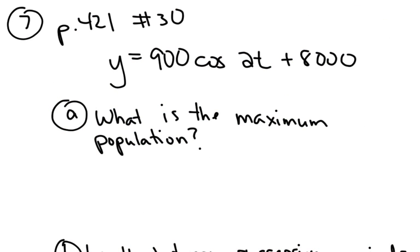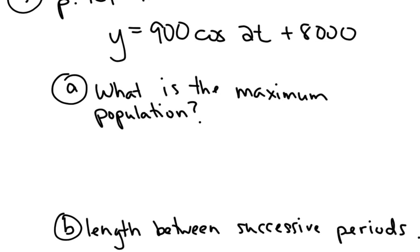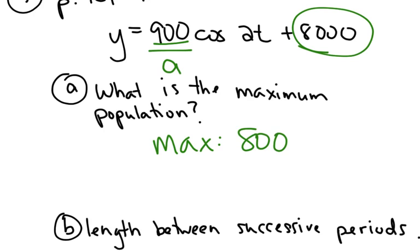The last problem in this video is from page 421, number 30. It's the predator population model, which is an excellent model for sine and cosine functions. In a predator-prey model, the predator population is modeled by the function y equals 900 cosine of 2t plus 8,000, where t is measured in years. The first thing I want to find is the maximum population. Remember that this is the line that goes down the middle of the graph. It's called the vertical shift. The amplitude tells you how far above and below that line you're going to go. So the maximum population has to be 8,000 plus 900, or 8,900, whatever the animal is.